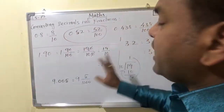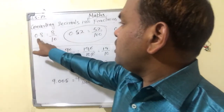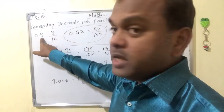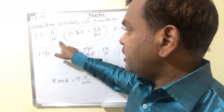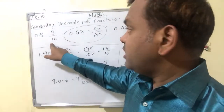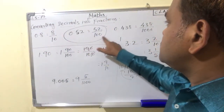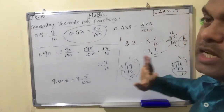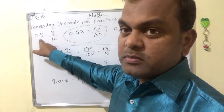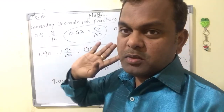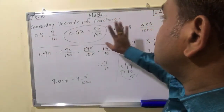So this is the way to convert decimals into fractions. Three concepts: first, after the decimal point, count how many places there are — add that many zeros to 1 in the denominator. One place means 10, two places means 100, three places means 1000. Then write the numerator as the number without the decimal point.